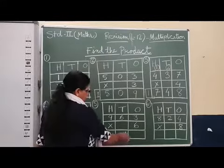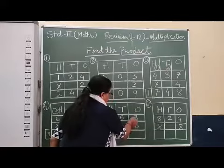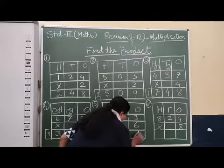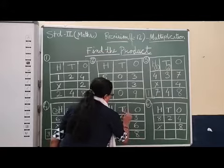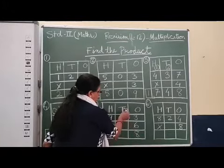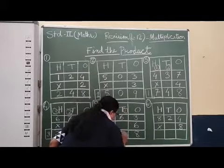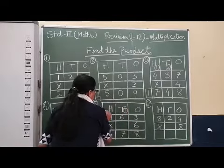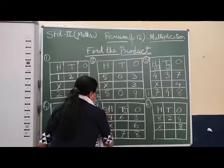Here, the next one. One's place, three times six, eighteen. We will write eight here, one on top. Ten's place, six times six, thirty-six plus four. Thirty-seven, I will write seven here.